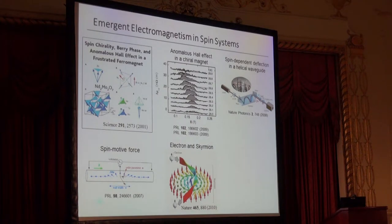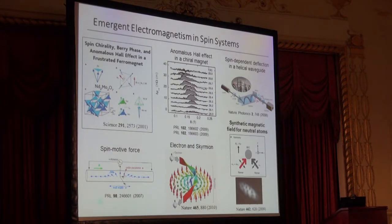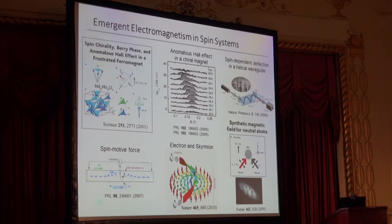Emergent electromagnetism is also demonstrated in neutral photon systems. Here is a photon propagating along a helical waveguide, and they observe a spin-polarization-dependent lateral shift of light propagation — described as an optical spin Hall effect. Also, we know that synthetic magnetic fields are generated by applying Raman lasers on Bose-Einstein condensates and quantum gases, pioneered by the Ian Spielman group at JQI. That can also be described as the effect of a pseudo-spin texture formed in the dressed-atom picture. All of these share the same fundamental mechanism.